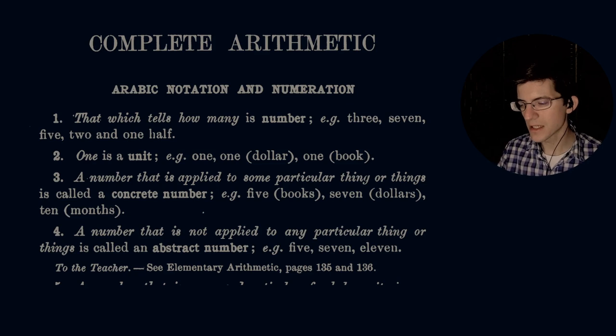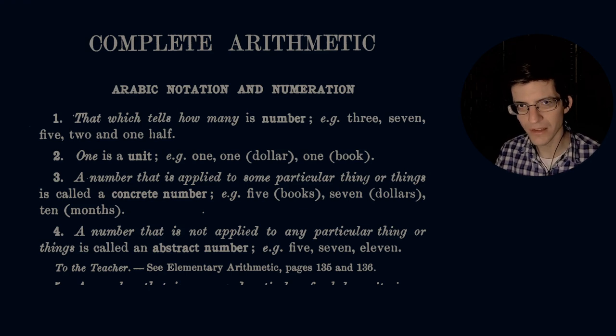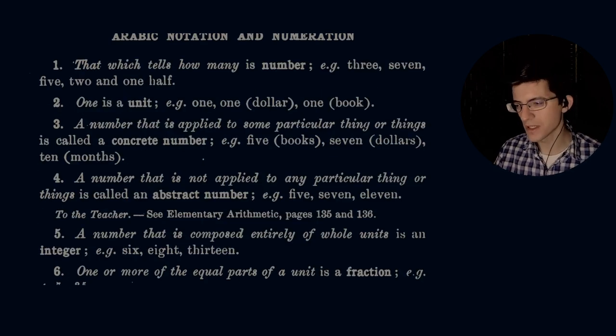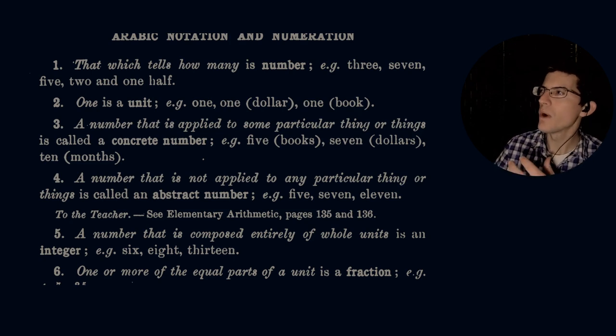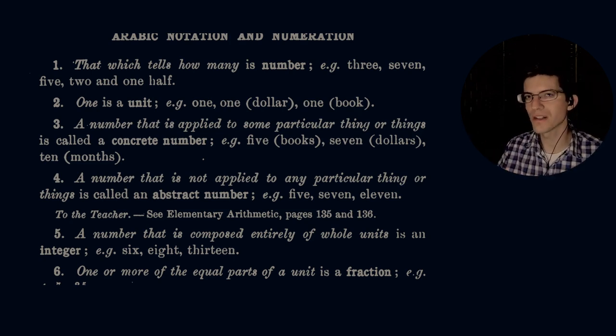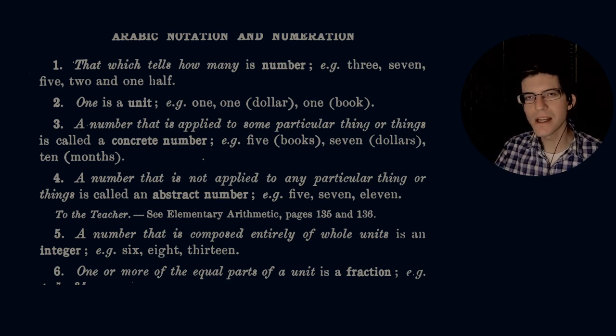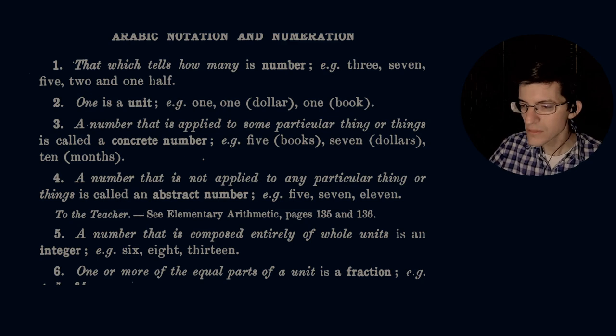Three: a number that is applied to some particular thing or things is called a concrete number, e.g. 5 books, $7, 10 months. So applied to particular things. This means that it actually exists within some realm. It is a tangible object in that world. Number four: a number that is not applied to any particular thing or things is called an abstract number, e.g. 5, 7, 11. This is when you are simply dealing in the realms of pure quantity. That is the abstract, speaking in the theoretical, same thing applies to numbers.